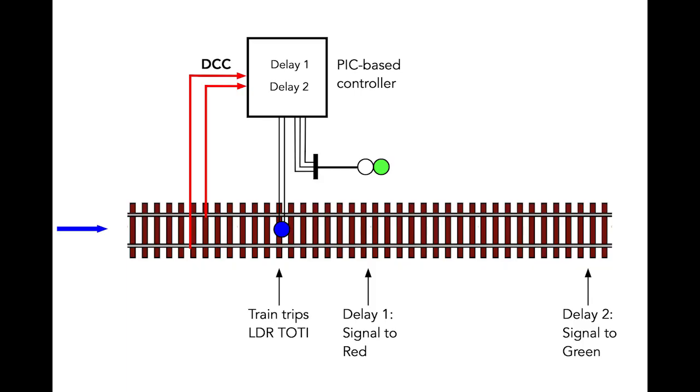The signal is normally green. The train is detected as it passes the signal. After a delay, the signal turns to red. After a further delay, it turns back to green.